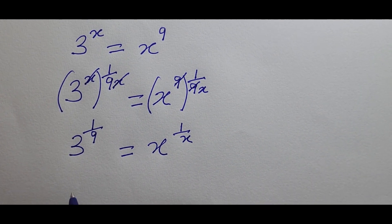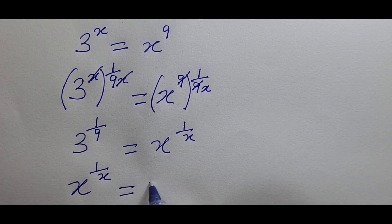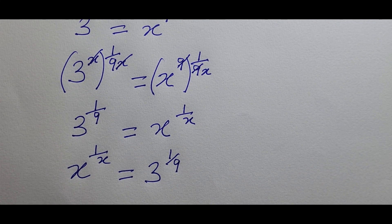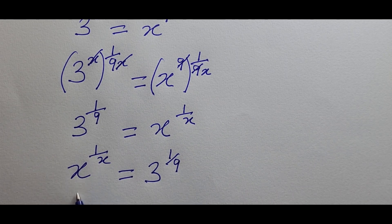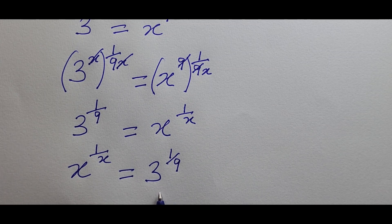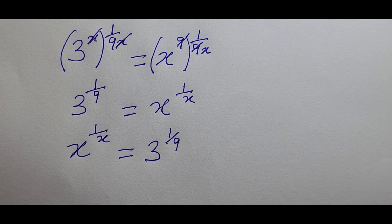So we have x^(1/x) = 3^(1/9). What we need to do is express the right-hand side in the same format — that is, find a number raised to 1 over that same number. We need to rewrite 3^(1/9) so it looks like [number]^(1/[same number]).